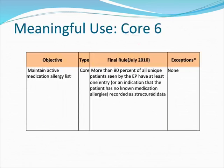Meaningful Use Core 6, Final Rule: More than 80% of all unique patients seen by the EP must have at least one entry, or an indication that the patient has no known medication allergies, recorded as structured data. Exception: None.